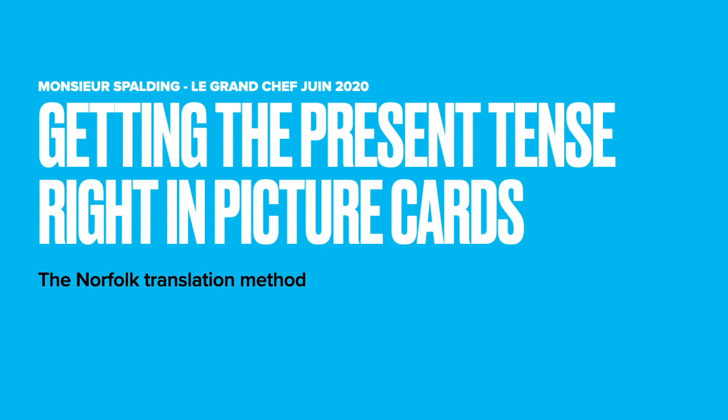Today's video is called Getting the Present Tense Right in Picture Cards. One of the things that came up as a really common error in the last exercise, done by students both in Year 9 and in Year 11, quite possibly also in Year 10, was getting their present tense wrong in the picture card. So hopefully this video will help us to address that issue so that we can get it right and get some real credit for the work that we're doing.